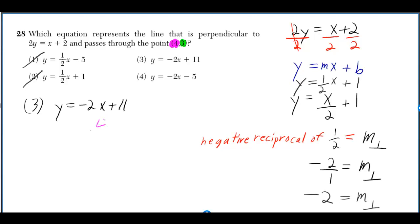So we want x to be 4 and y to be 3. So are these equal? Negative 8 plus 11 does give you 3. So yes, this is our answer.